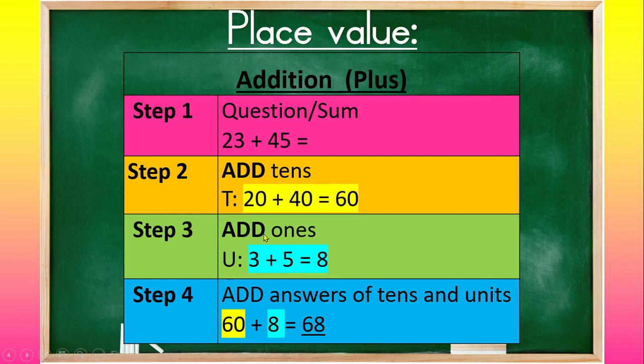Step 3 is to add the ones. So you have a 3 and a 5. 3 plus 5 equals 8. Step 4 is always going to be to add the answers. So first I have 60 plus 8 equals 68. Therefore 23 plus 45 equals 68.